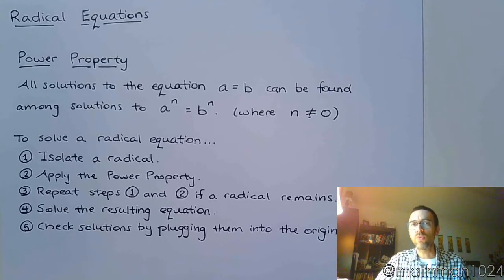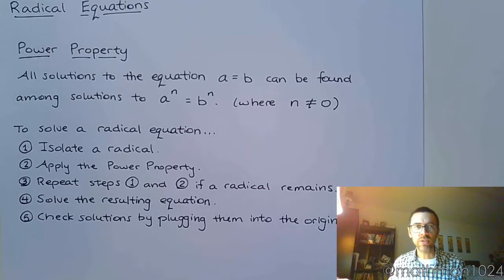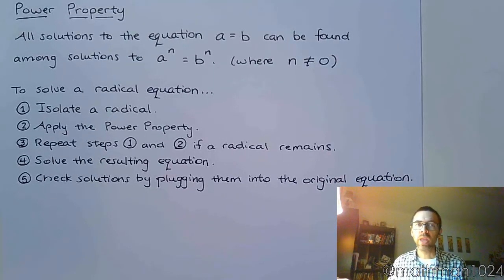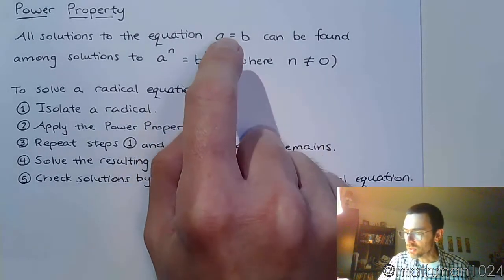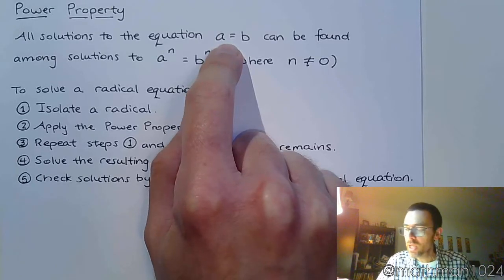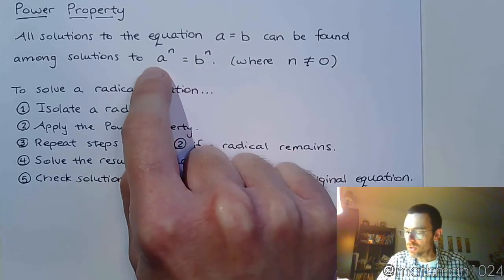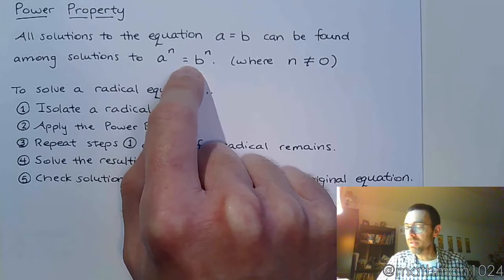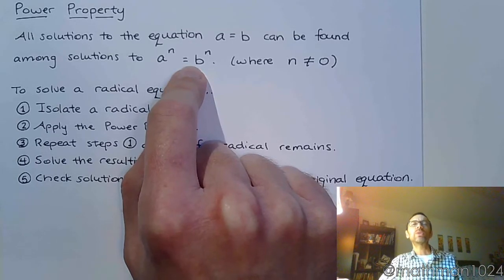In order for us to do this, we're going to first talk about the power property. The power property says that all solutions to your equation a = b can be found among solutions to a^n = b^n. Basically what we're saying is that you can raise both sides of an equation to the same power.